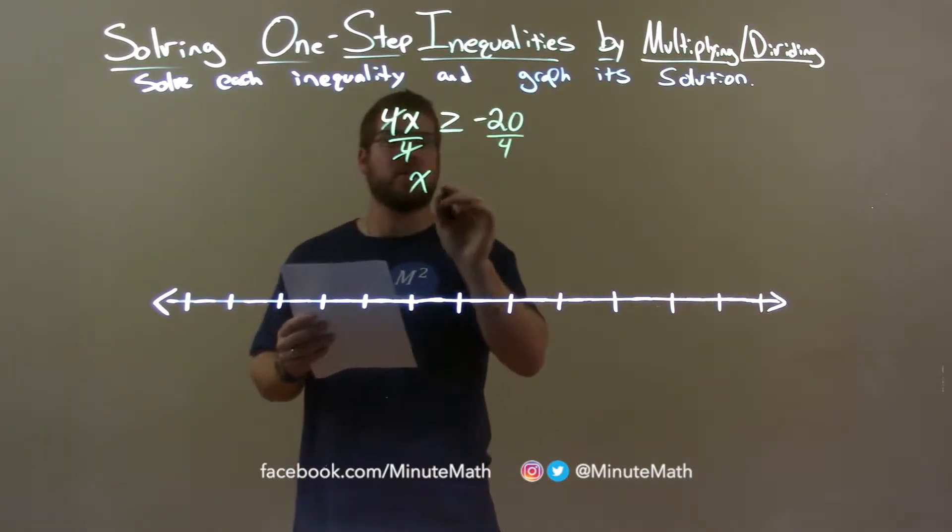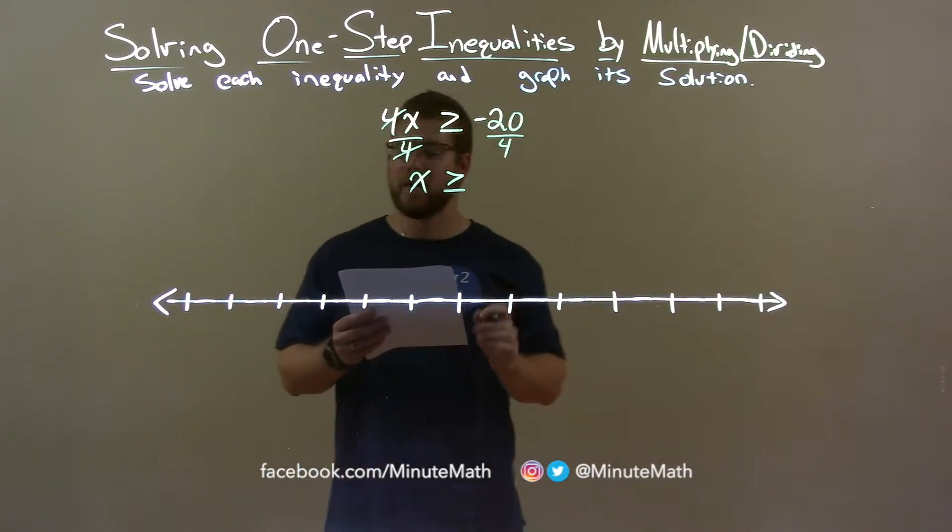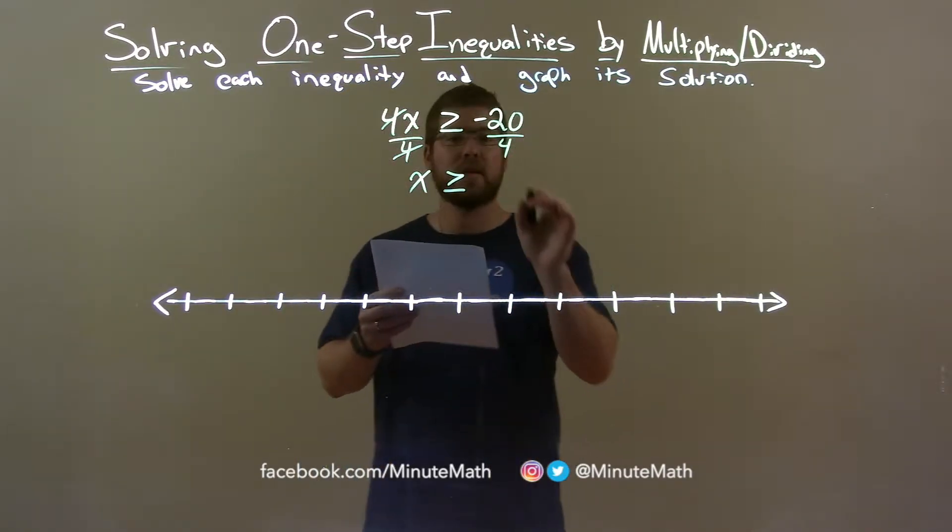and x is now by itself. It's still greater than or equal to, but negative 20 divided by 4 is negative 5.